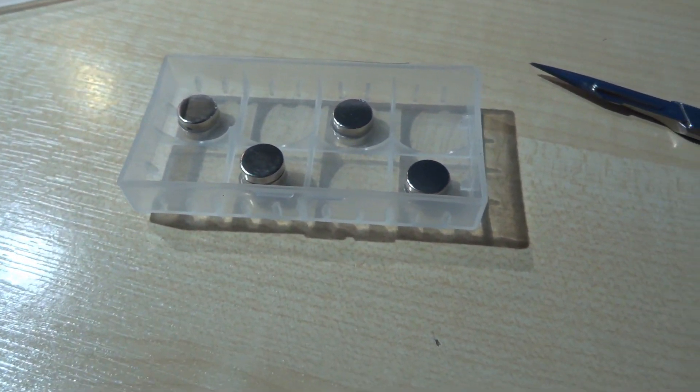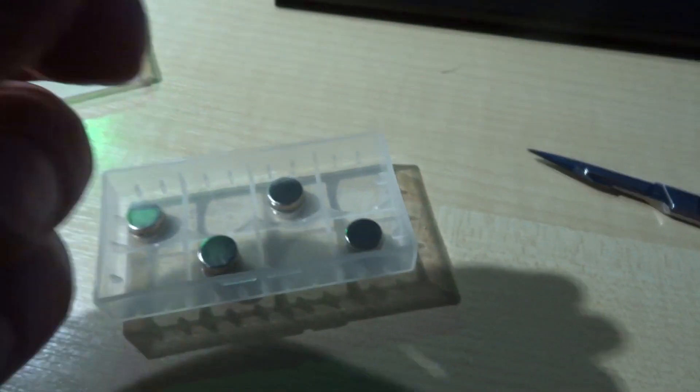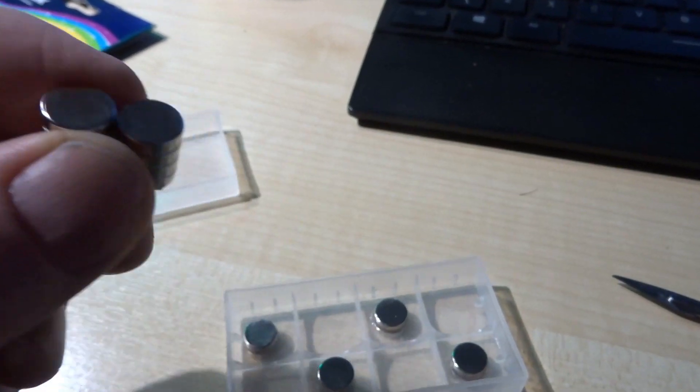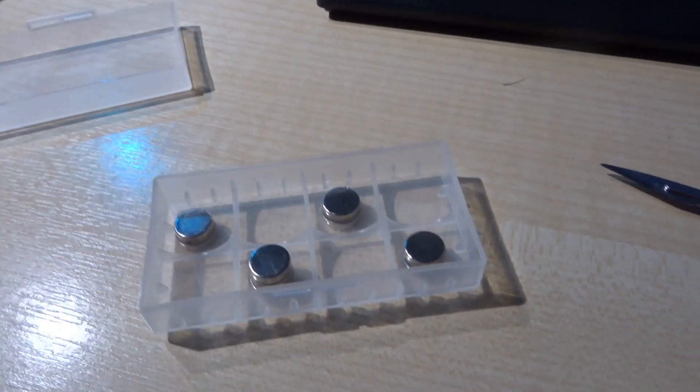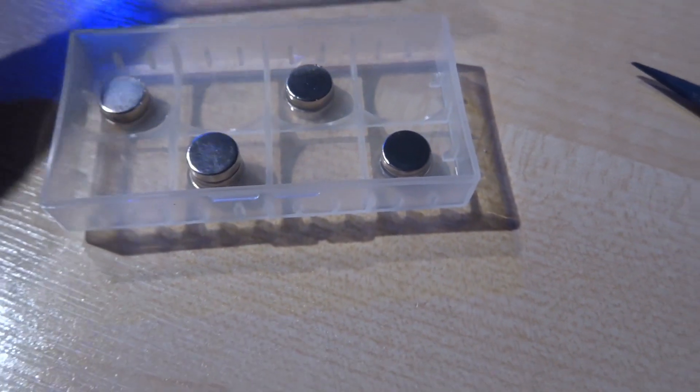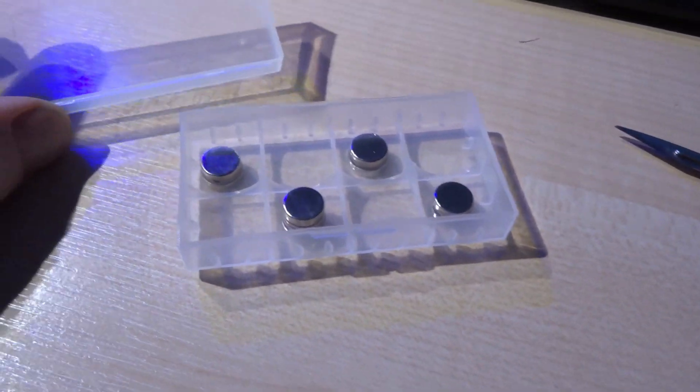DIY glass cleaner attempt number one. I've got these little magnets, you get a bunch of them off Amazon or eBay. They're neodymium magnets, very strong, and I've just super glued them into this tray. It's like a sewing kit or you sometimes get these in boxes of crackers, so I've cut this box in half.